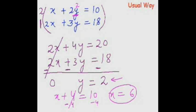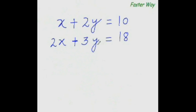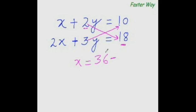As you have just seen, this usual way is indeed very long and requires a lot of skill and talent to do mentally. But wait, there is a better way. To find the value of x, all you need to do is multiply this number with this number like this, and then subtract from it the product of this number and this number. So 2 times 18 is 36, minus 3 times 10 is 30. This is the numerator.